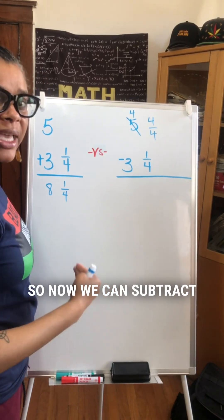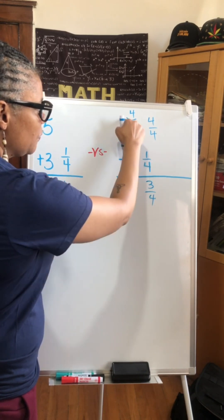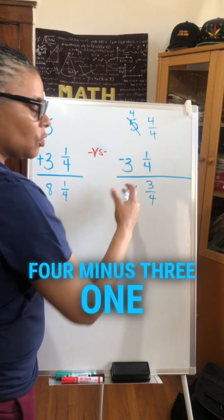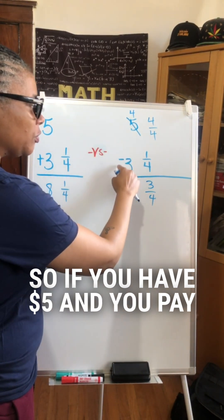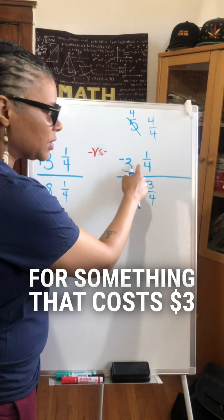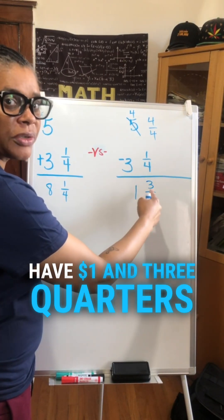So now we can subtract 4 minus 1, 3 fourth. 4 minus 3, 1. 1 and 3 fourth. So if you have $5 and you pay for something that costs $3 and a quarter, you're going to have $1 and 3 quarters left.